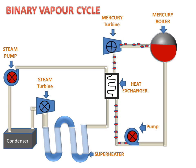After passing through the heat exchanger, the vapors will go to the pump, and the pump will pump these vapors back to the mercury boiler. Meanwhile, the heat exchanger will exchange this heat with the water of the boiler.